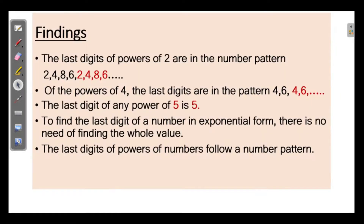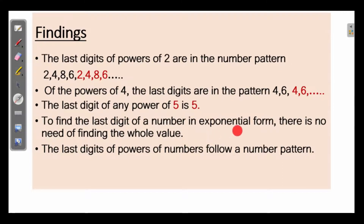Findings. The last digit of powers of 2 are in the number pattern 2, 4, 8, 6. The last digits of powers of 4 are in the pattern 4, 6, 4, 6. The last digit of any power of 5 is 5. To find the last digit of a number in exponential form, there is no need of finding the whole value. The last digits of powers of numbers follow a number pattern.